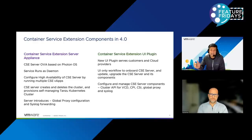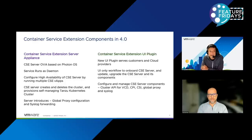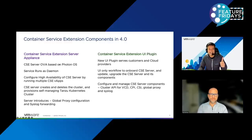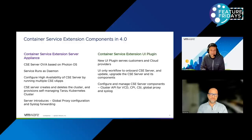There are a couple of new features introduced — one is global proxy configuration and syslog forwarding. Tenants get the ability to configure a particular location in the VM so they can forward syslogs to a particular location. The second component is the CSE UI plugin, where tenants can use the UI to create a Kubernetes cluster. The workflow is really easy — you just open the VCD UI, click on a menu, and the menu allows you to create the Kubernetes cluster. That was new in 4.0 — it removed a lot of the CLI and configuration that you had to do at the backend, and high availability has also been a long-requested feature.